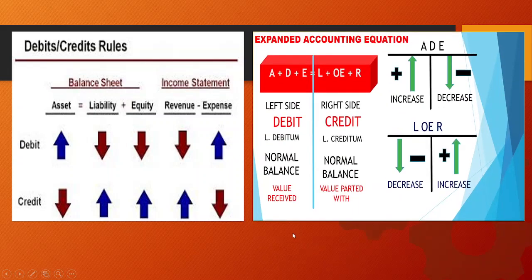In addition, let me present this additional slide showing the accounting equation. It is divided into two sides — the left side and the right side. The accounting equation always maintains a balanced figure. Therefore, the total of assets, drawing, and expenses must always equal the total of liabilities, owner's equity, and revenue. These are our accounting elements shown in the expanded accounting equation. Let us use the acronym A-DE-L-E-R.